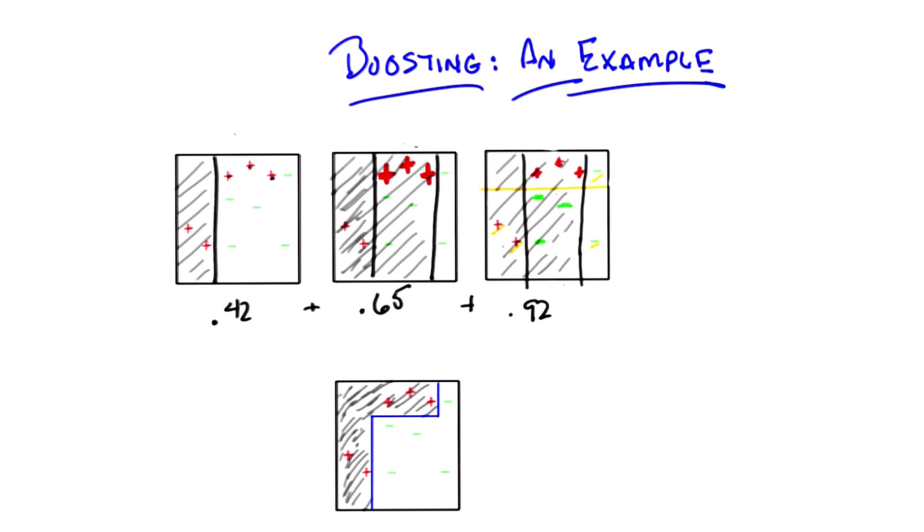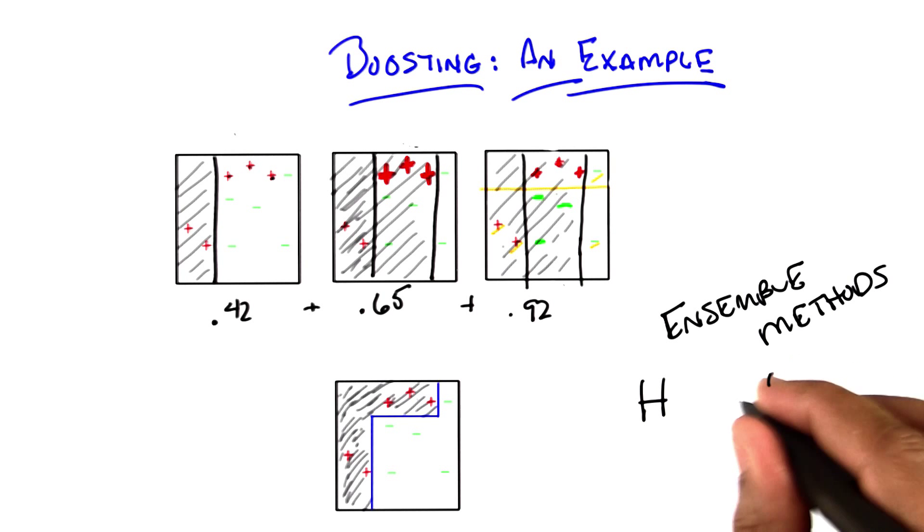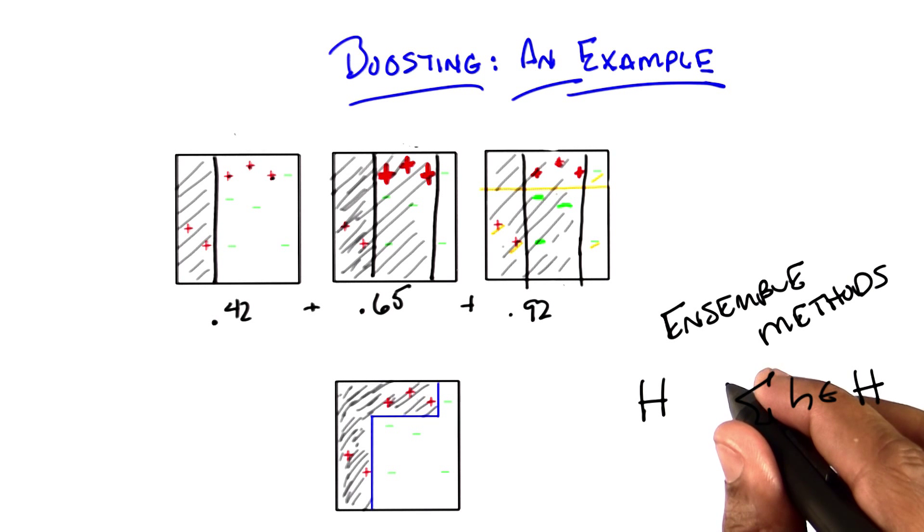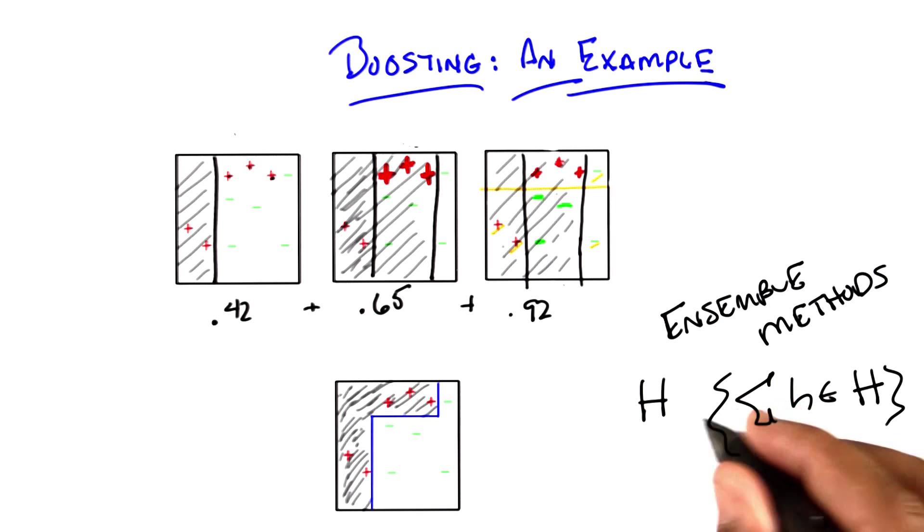And this is a general feature of ensemble methods, that if you try to look at just some particular hypothesis class, let's just call it H, because you're doing weighted averages over hypotheses drawn from that hypothesis class, this hypothesis class is almost all, well, is at least as complicated as this hypothesis class, and often is more complicated. So you're able to be more expressive, even though you're using simple hypotheses, because you're combining them in some way.